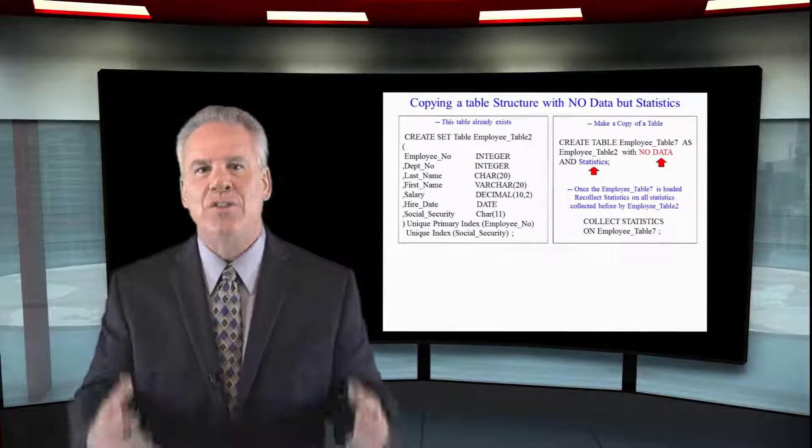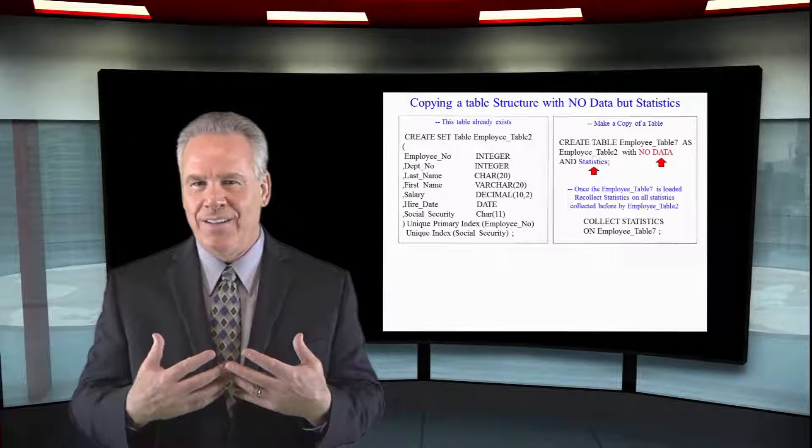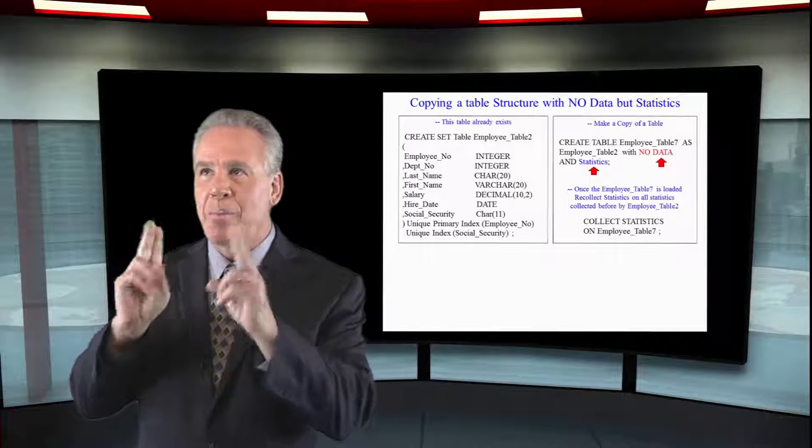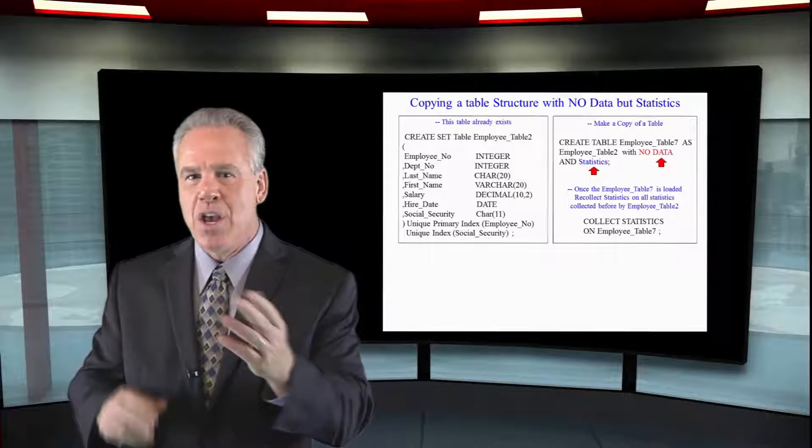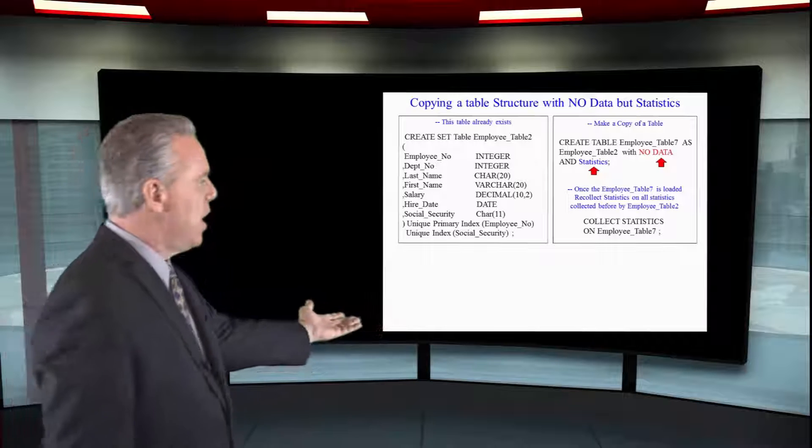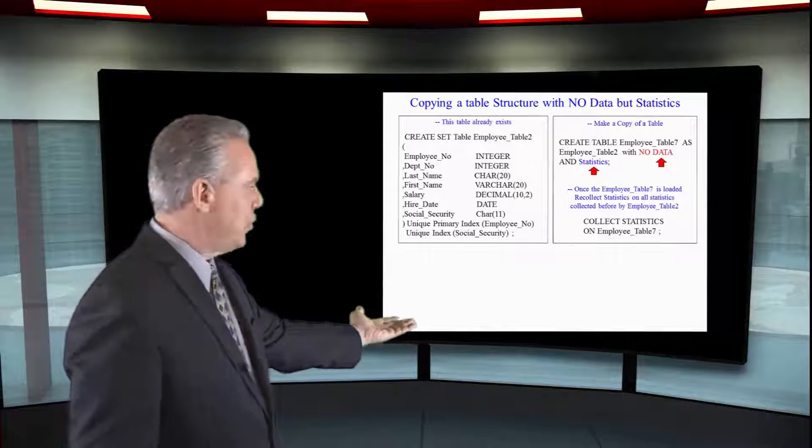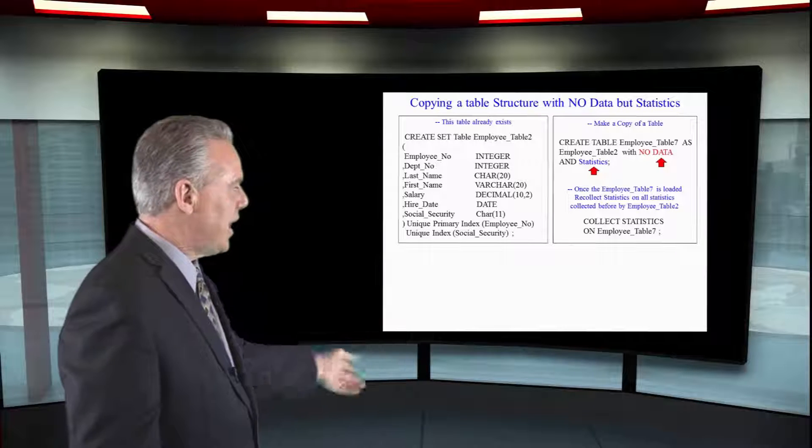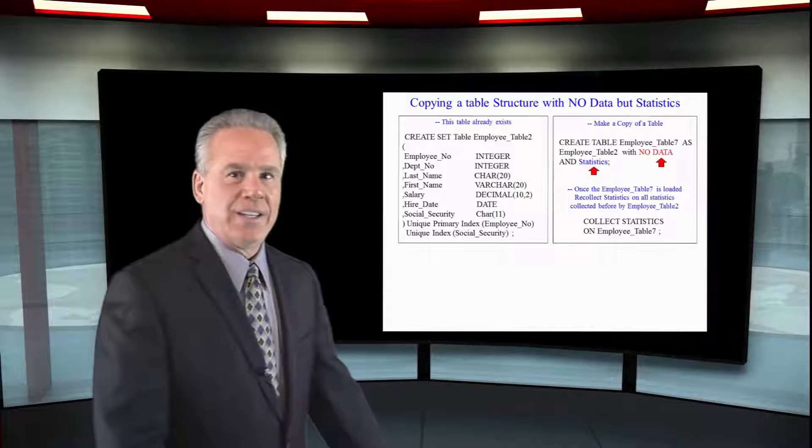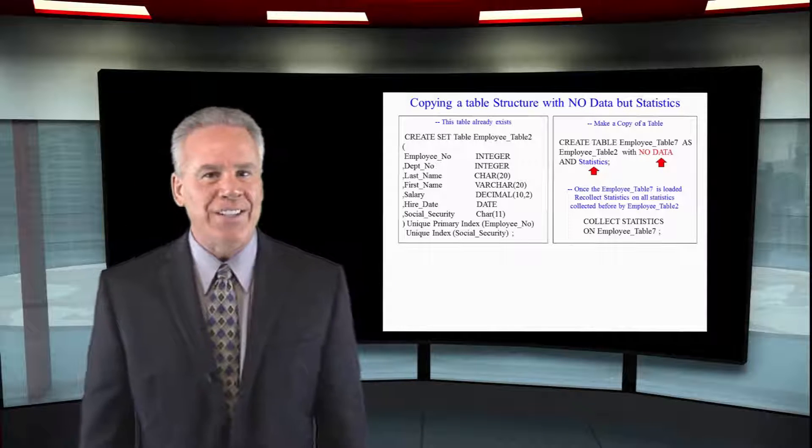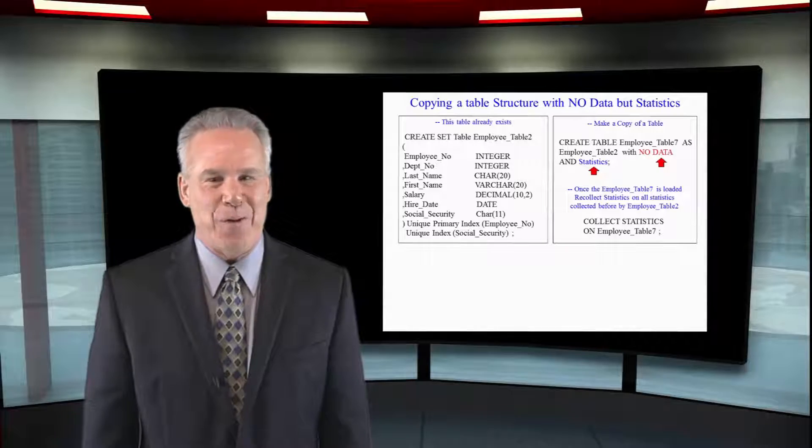You see, when you have zeroed statistics, the system knows that you collected in the past on first name and last name. So as you can see down here, when I load my Employee_Table_7 with data and then I say COLLECT STATISTICS on Employee_Table_7, it only collects on first name and last name just like before.